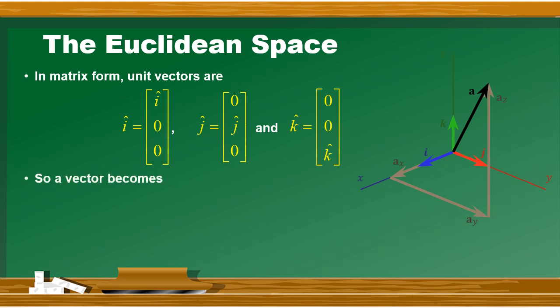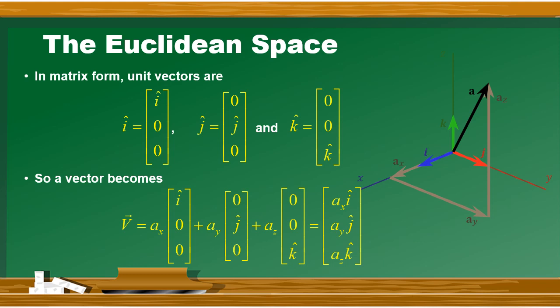So vector v becomes: ax times the i matrix, plus ay times the j matrix, plus az times the k matrix. When these are multiplied out, we get the same form as before: ax·î + ay·ĵ + az·k̂. This way, any vector can also be written in matrix form. Next, we will have a dedicated lecture on Dirac notation, where we will see how elements of a vector space can be represented as vectors.